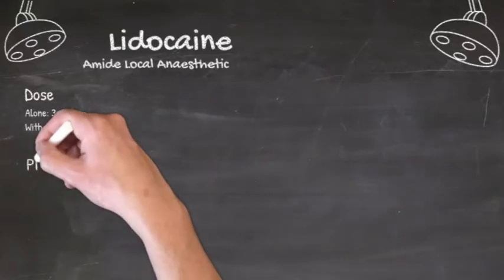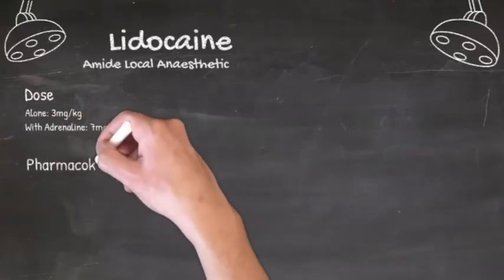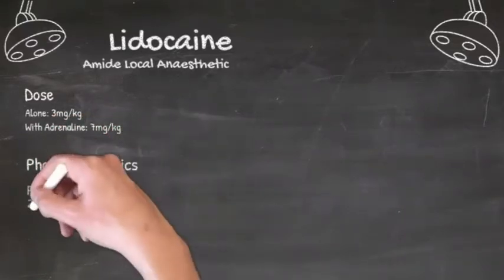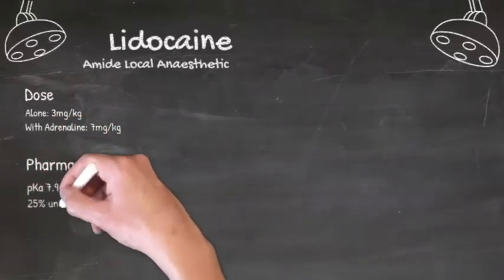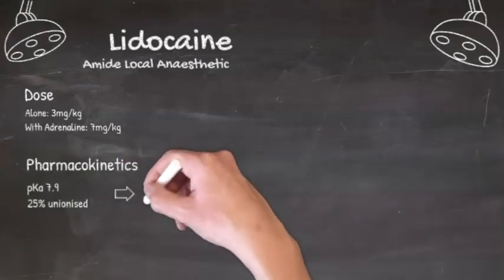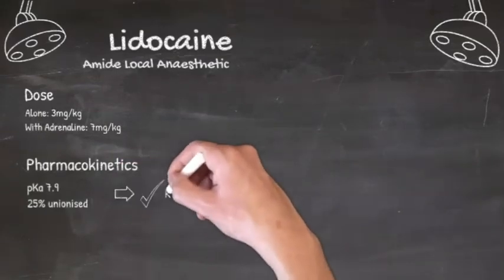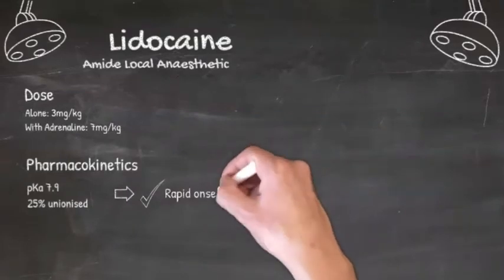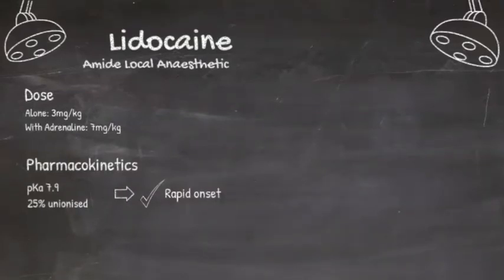It is generally available in vials of 1% or 2%. It has a pKa of 7.9, which is relatively low for a local anaesthetic, giving it a relatively fast onset because 25% of it is unionised at a pH of 7.4, a greater proportion than many others.